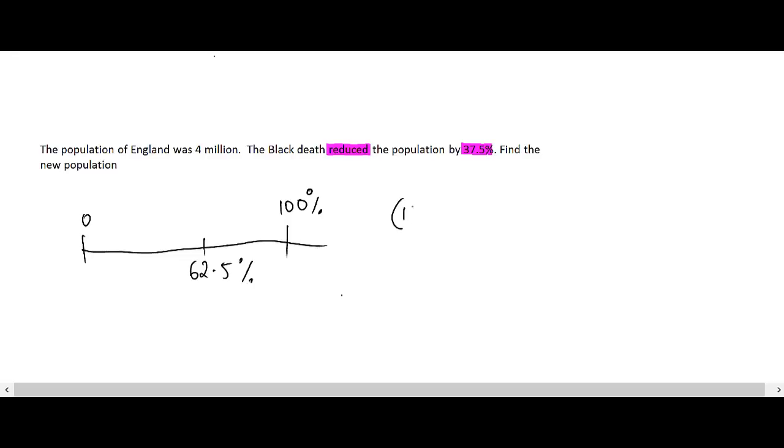And just like the other example, I'm going to find the multiplying factor. So, I'm going to do 62.5% means that it's 62.5 out of 100. And if I work this out using a calculator, 62.5 divided by 100 is equal to 0.625.